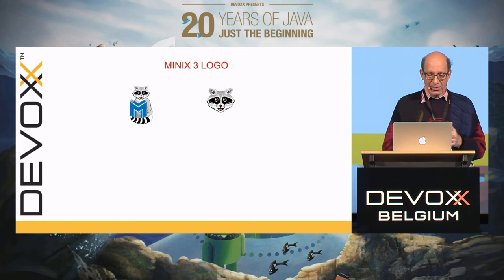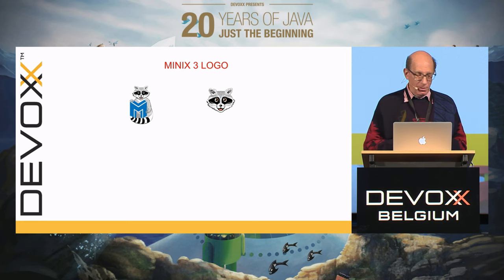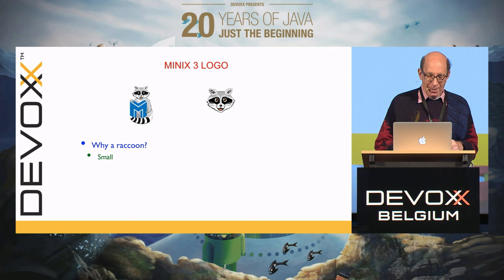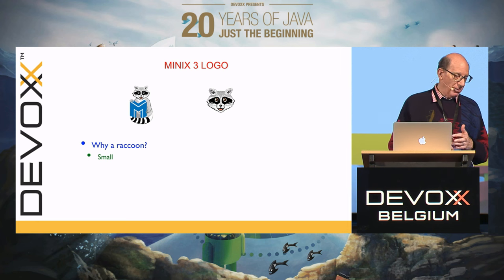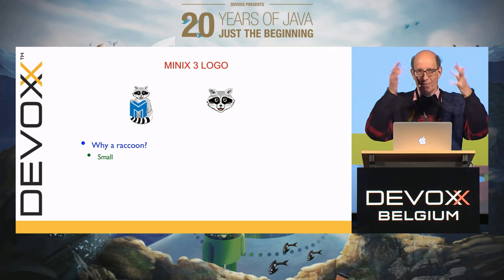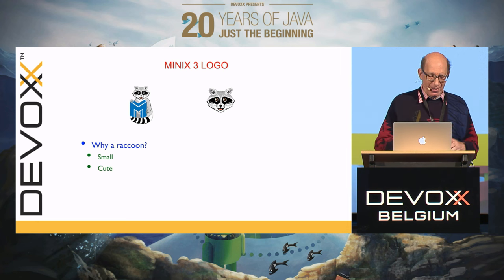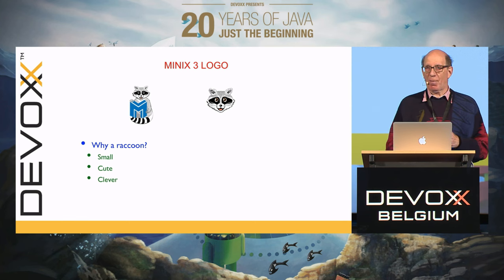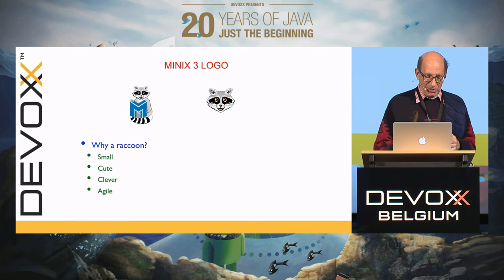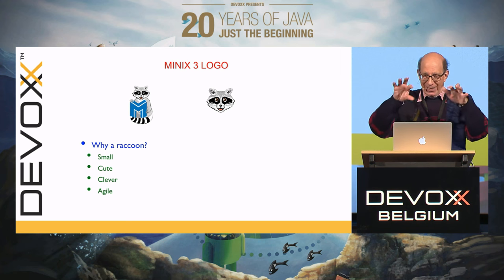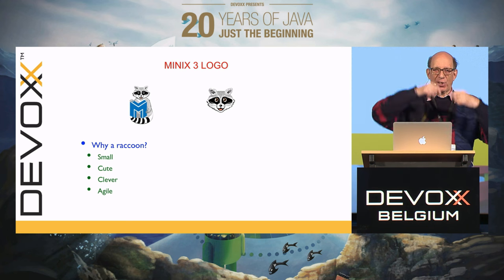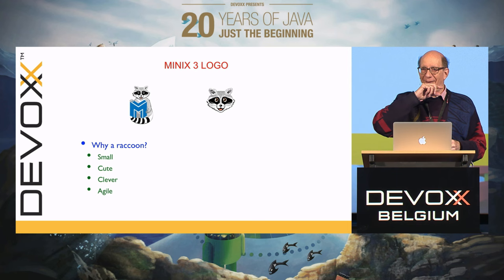MINIX has a logo — it's the raccoon. Why a raccoon? They're small, and our emphasis is on small. They're cute, everybody likes raccoons. They're very smart, extremely smart animals. They're agile, they've got little hands, and in the US they can open garbage cans.